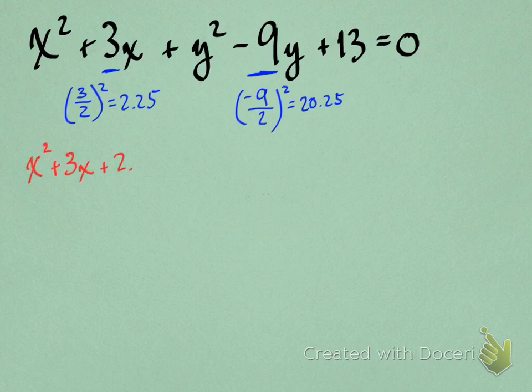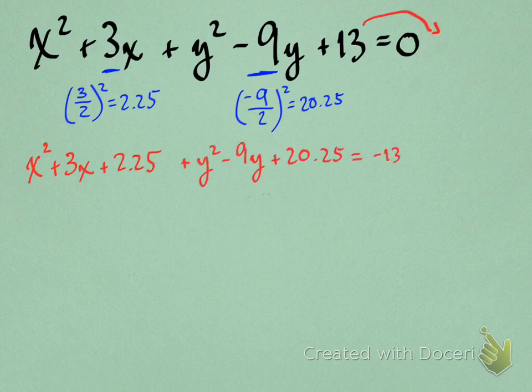b over 2 squared gives us those decimal numbers there. Okay, so what? So we got x squared plus 3x plus 2.25. And then we have y squared minus 9y plus 20.25. And then when we add all that other stuff there, moving the 13 over, add the same numbers to both sides of the equation there. And now we've got everything spelled out. Yeah, it is kind of a mess, but we're ready to factor now and clean it up.